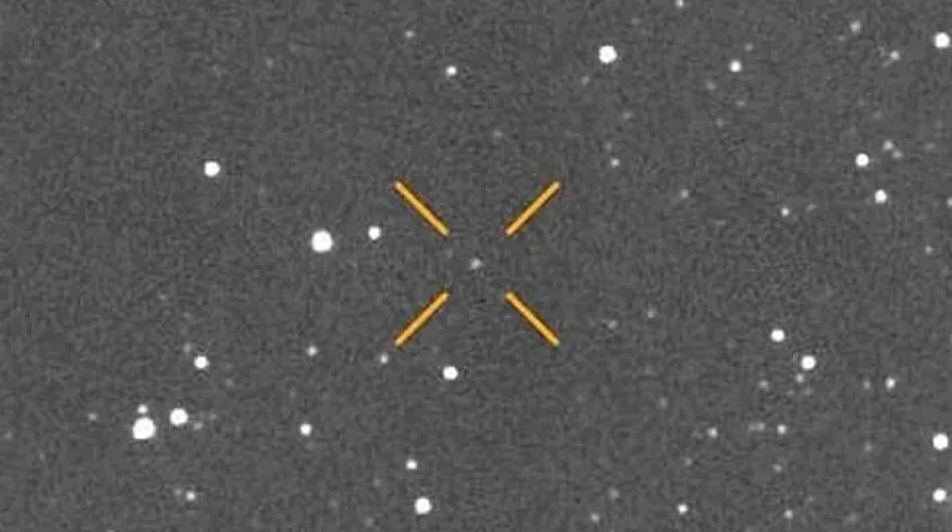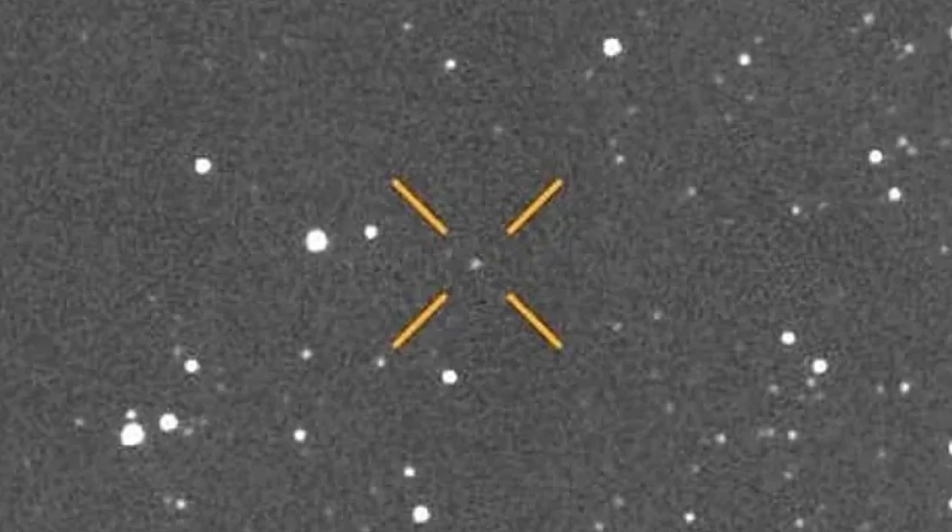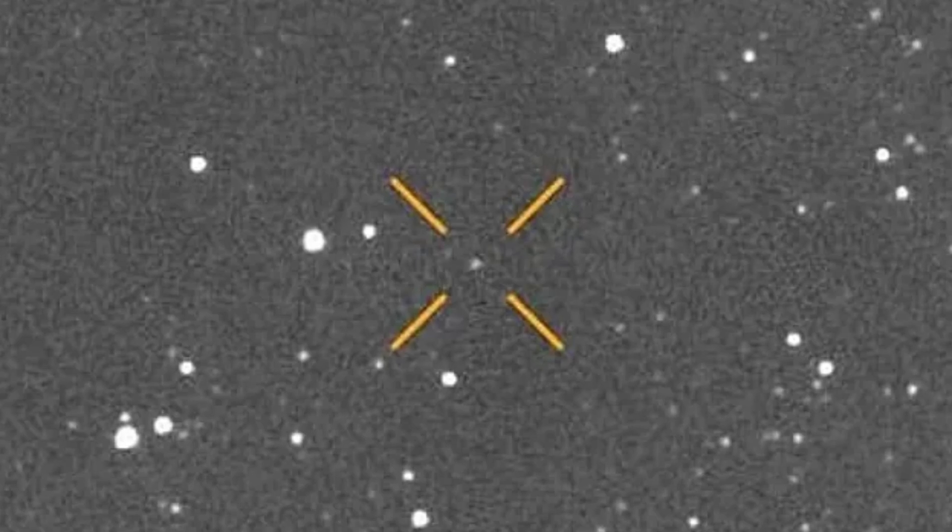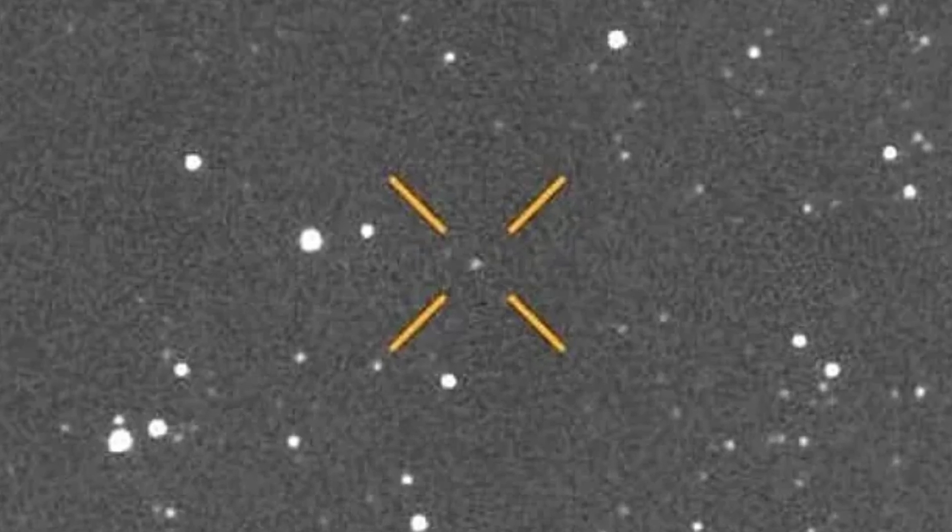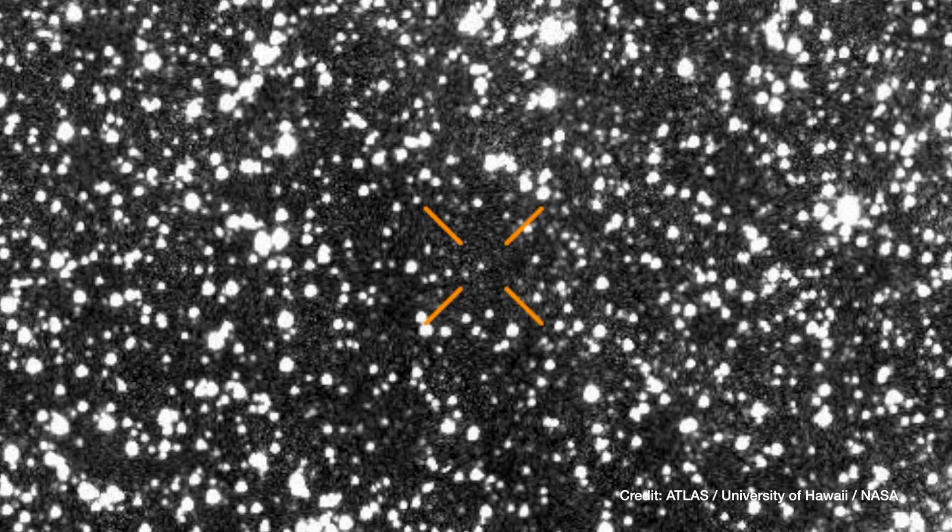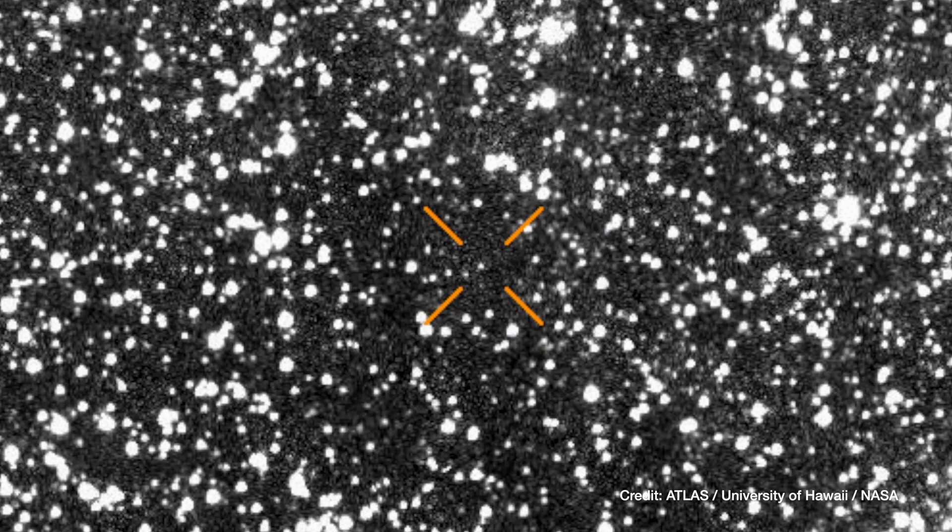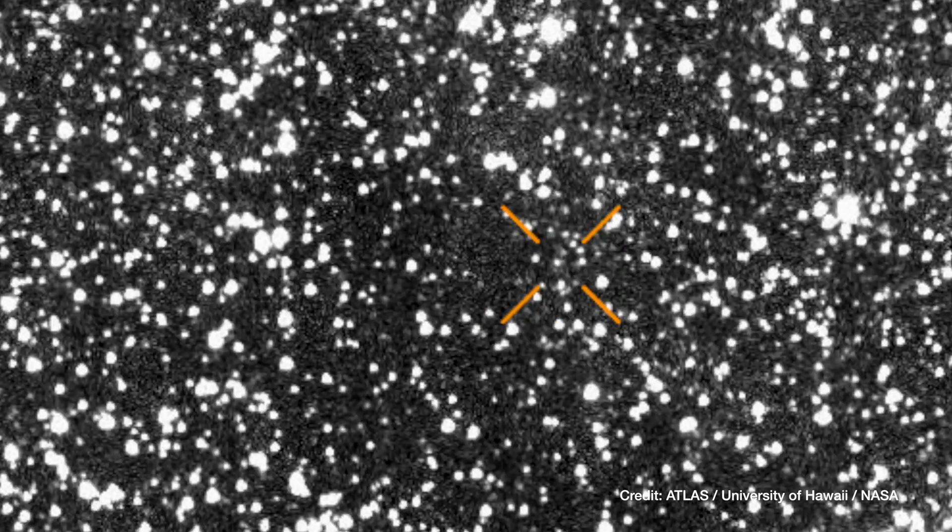Unfortunately, it won't get very close to Earth. Its closest approach to us will be about 1.8 astronomical units, or 270 million kilometers, in December 2025. That means it will remain faint, likely around magnitude 18 or 19, visible only through moderate to large telescopes.